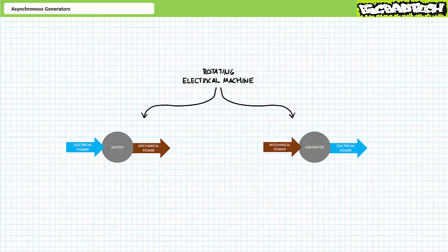As you're no doubt aware, motors and generators are dual aspects of a single entity that might more holistically be considered a rotating electrical machine. Motors are rotating electrical machines that convert electrical power input into rotational mechanical power output. In contrast, generators are rotating electrical machines that convert rotating mechanical power input into electrical power output. Our task today is to explore generators.